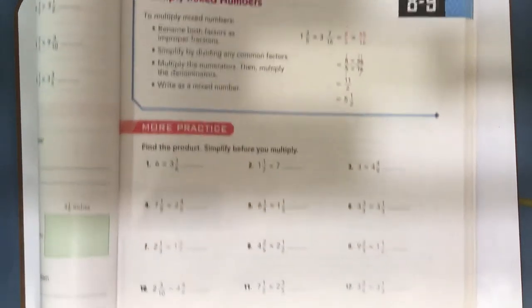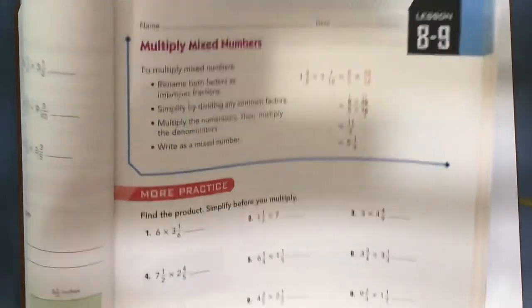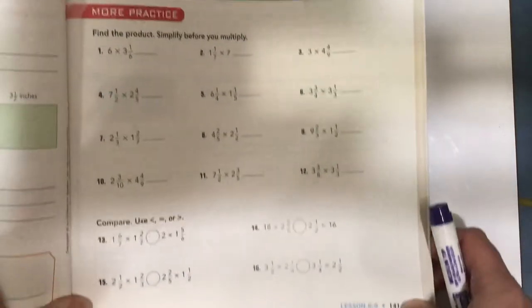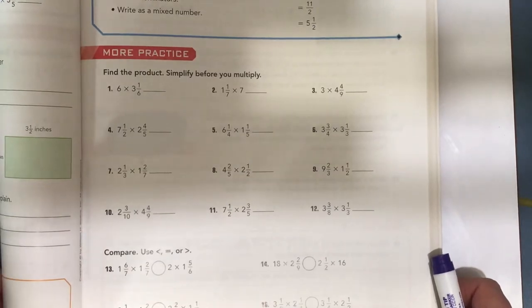Hello fifth grade. Today we're going to work on multiplying mixed numbers, lesson 8-9. I'm on page 141 in your workbook. You're going to do the even problems, so I'm going to do a few of the odd problems with you.